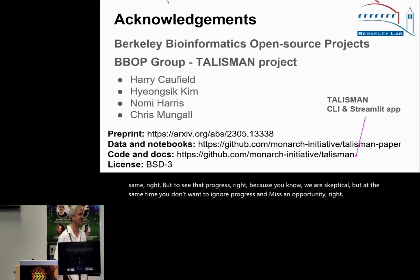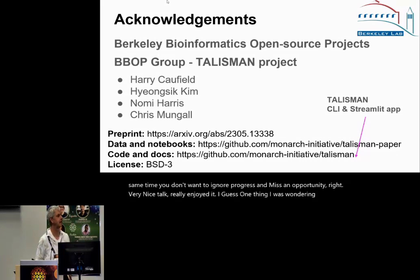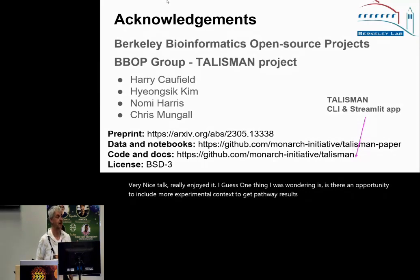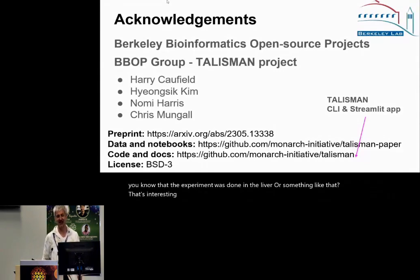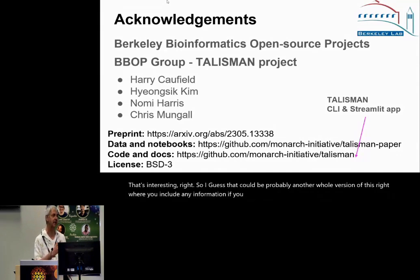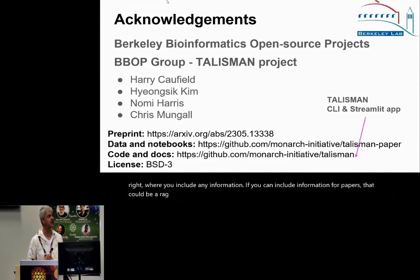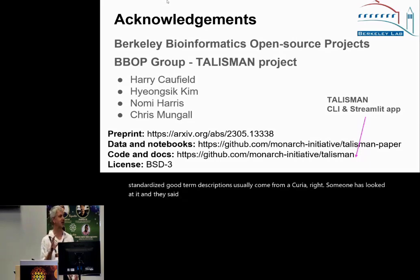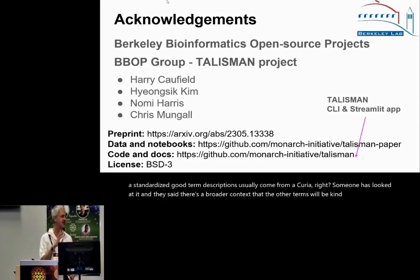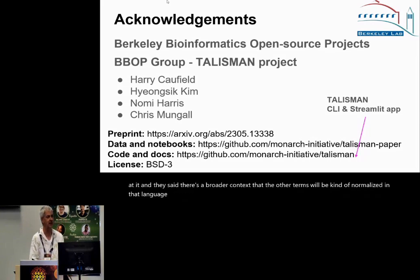Question: Is there an opportunity to include more experimental context in the prompt to get pathway results that may be more relevant — for example, knowing the experiment was done in the liver? That could be another whole version of this where you include any information. If including papers, that could be a RAG approach. It's a little harder to evaluate because terminology won't be as standardized — GO term descriptions come from curation, so there's a broader context where other terms are normalized in that language. Maybe including even concepts from literature would help.